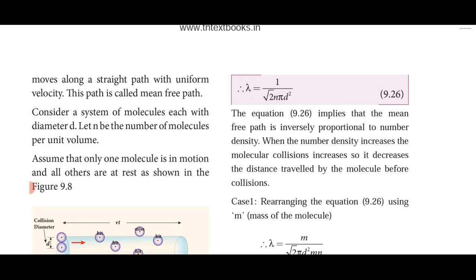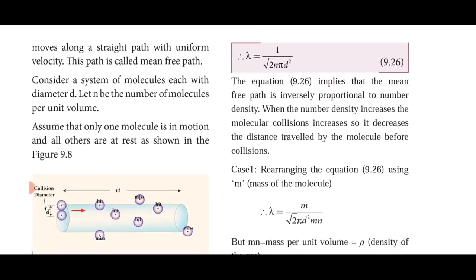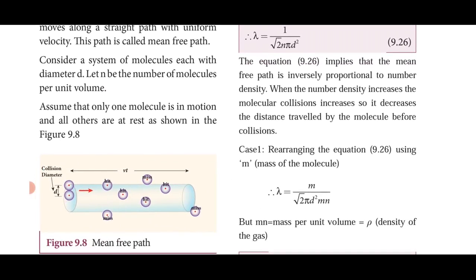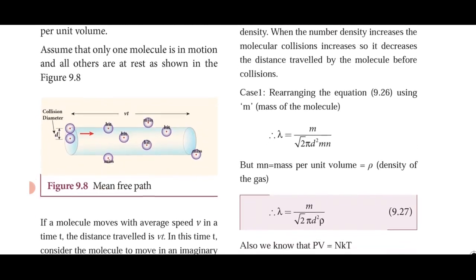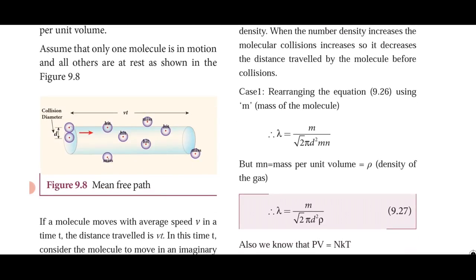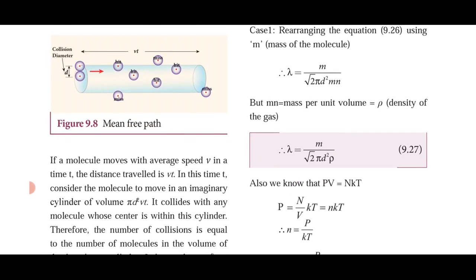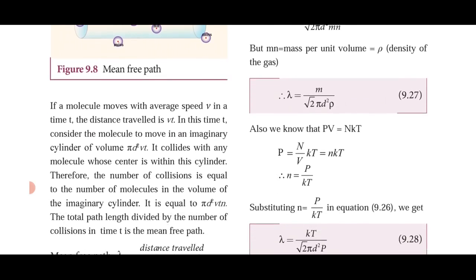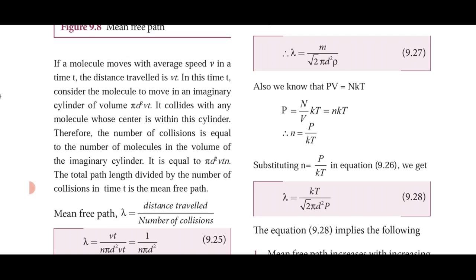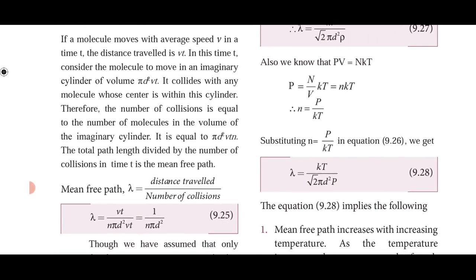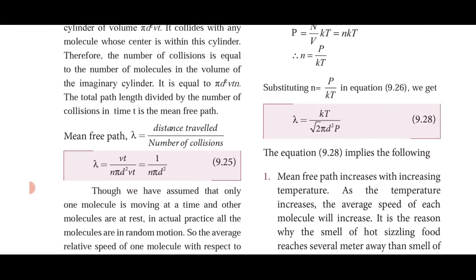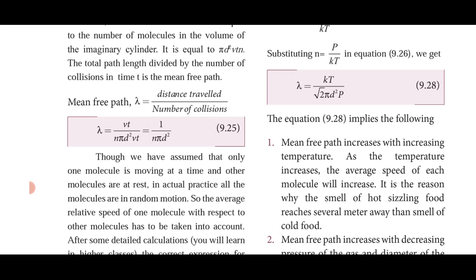When number density increases, molecular collisions increase, which decreases the distance traveled before collision. By rearranging — multiplying and dividing by mass m, where mn is the mass per unit volume (density ρ) — we get λ = m/(√2 · π · d² · ρ). Also using the ideal gas law p = nkT, so n = p/kT.